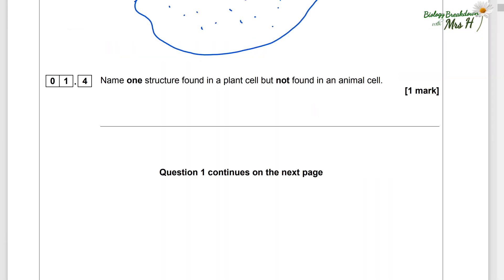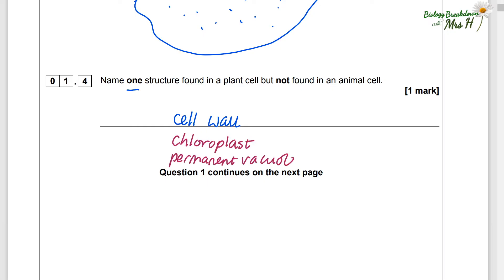Name one structure found in a plant cell but not found in an animal cell. Cell wall — that's one mark. Remember to just write one, but you may have chosen to write chloroplast or permanent vacuole.